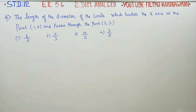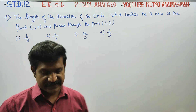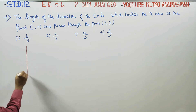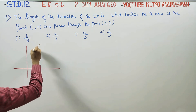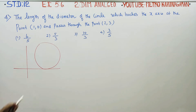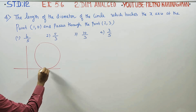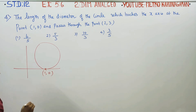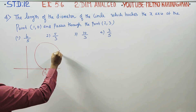Dear 12th standard students, in exercise number 5.6, sum number 4: find the length of the diameter of the circle which touches the x-axis at the point (1,0). Here is a circle. The circle touches the x-axis at (1,0) and passes through the point (2,3). Let (2,3) be any point on the circle in the first quadrant.